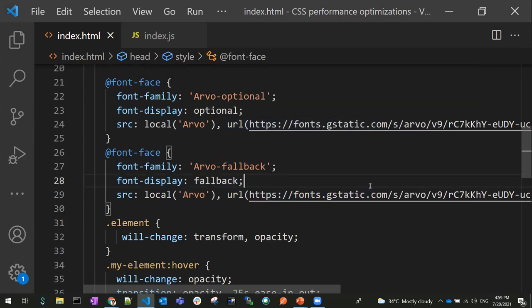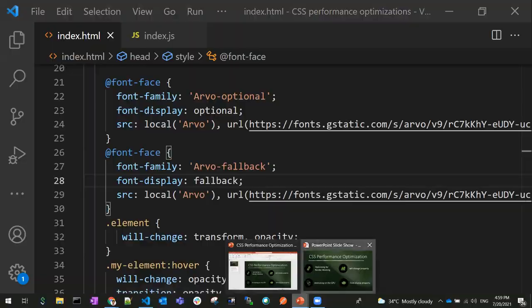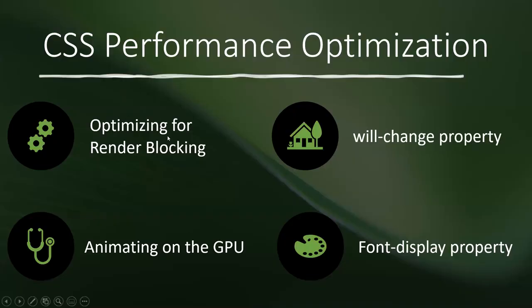To summarize the CSS optimization points: optimizing for render blocking is the most important to remember because it helps decrease render blocking significantly. I am currently using will-change in practice. I haven't tried animating on the GPU and font-display yet, but these are key optimization points. Hope you understand the video — thanks for watching, please subscribe for more videos.